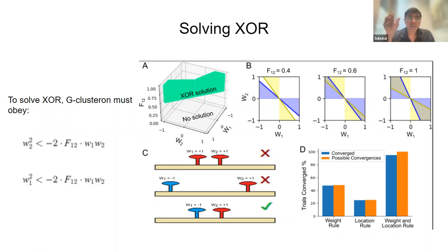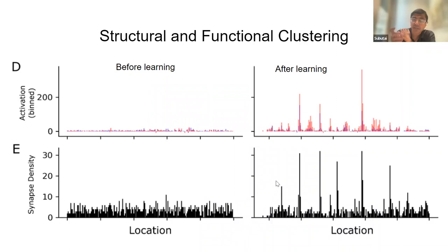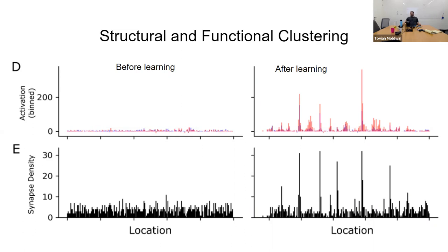An audience member asked about the chart showing location on the x-axis and synapse density on the y-axis, noting it looks like you could partition the dendrite into discrete segments. The speaker agreed that if you have clusters, you can post-facto partition the regions — but the way you get there might not be discrete.